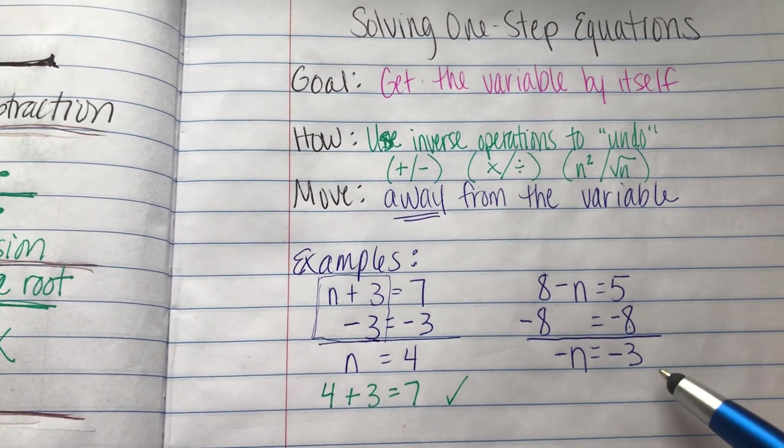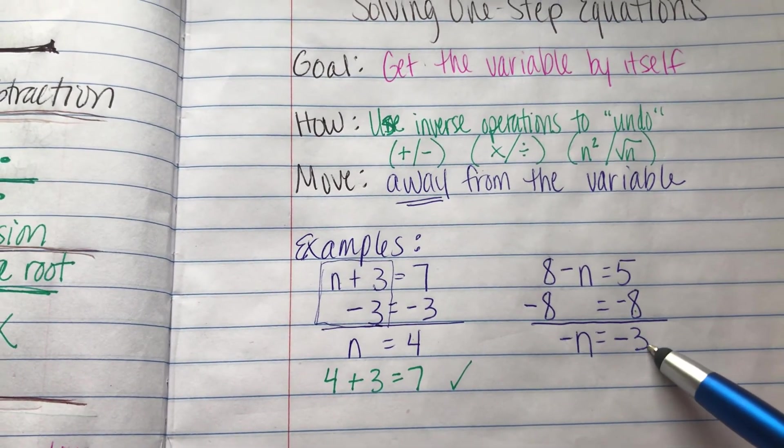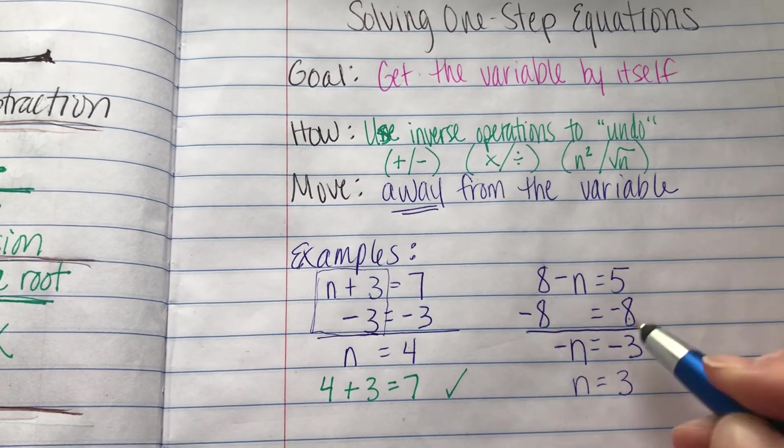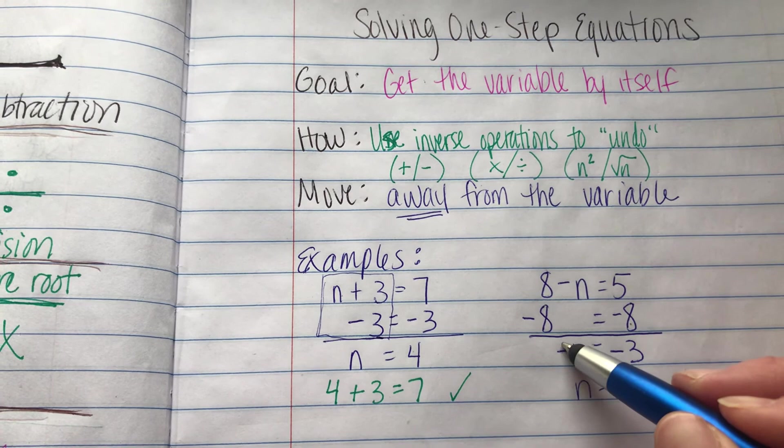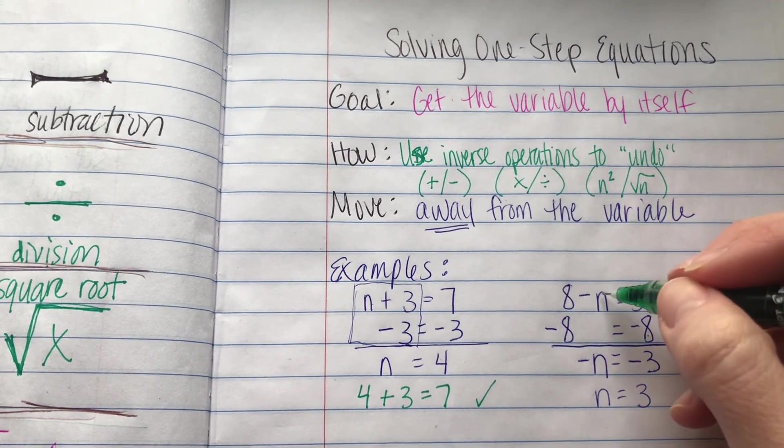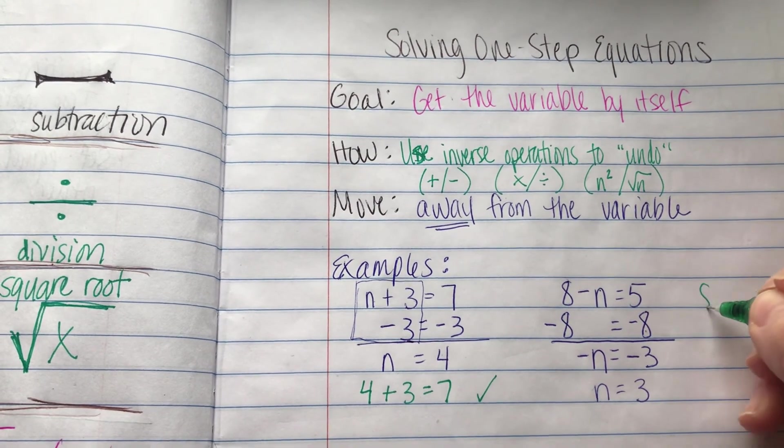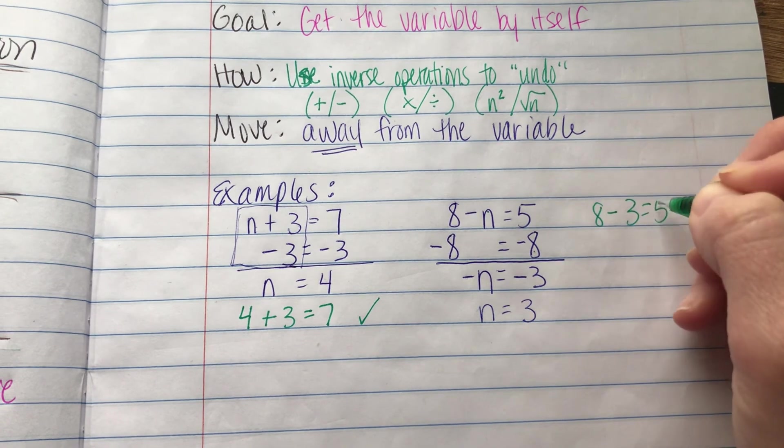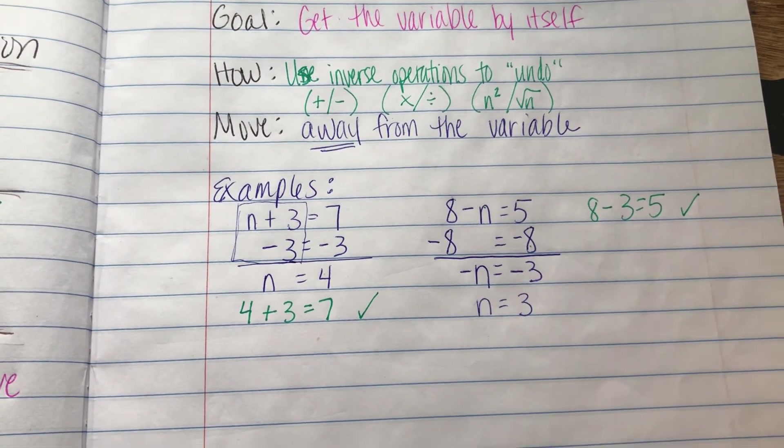So the opposite of n is the opposite of 3. So then that would mean that n would be 3. To turn this one positive, I turn that one positive too. And again, I can double check by putting 3 where n was in the equation. 8 minus 3 equals 5. Is that true? Yes. So I know my answer is right.